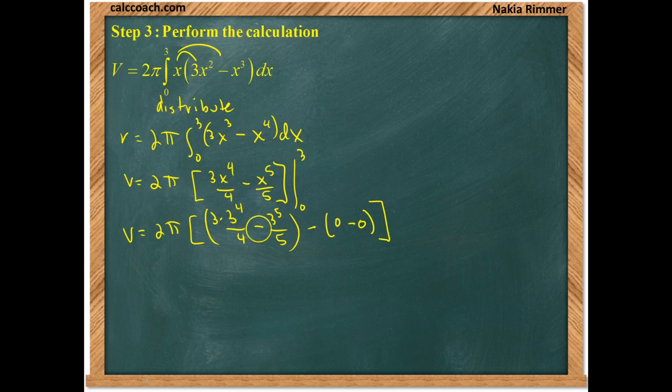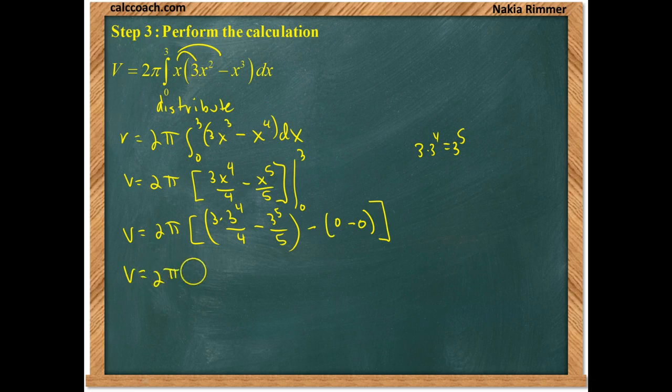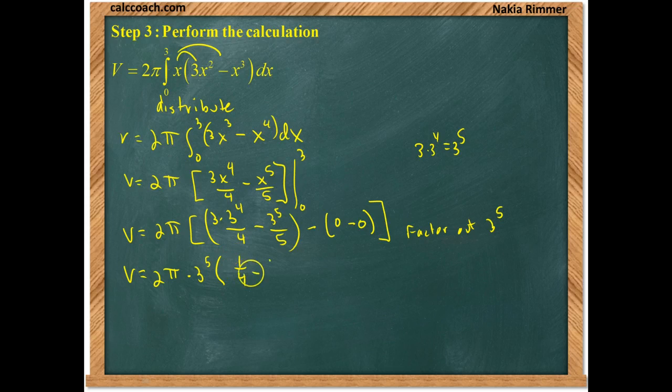We recognize that 3 to the 5th is actually in both fractions we have here, because 3 times 3 to the 4th is 3 to the 5th. So, to make our life easier, we're going to factor that out. We're going to factor out 3 to the 5th. By doing that, it leaves us with 1/4 minus 1/5.